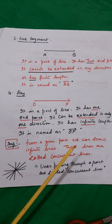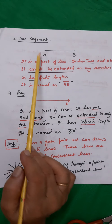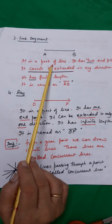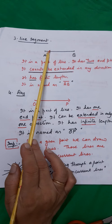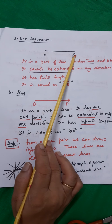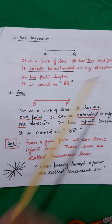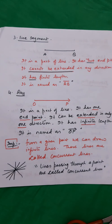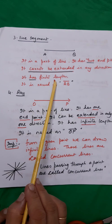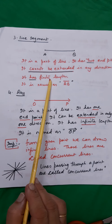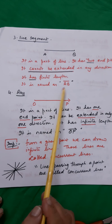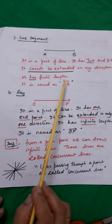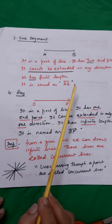Next is line segment. As you can notice here, it is a part of a line. It has two end points, A and B. It cannot be extended in any direction. It has finite length — finite length means the length which can be measured. It is named as AB with a line segment symbol over it.